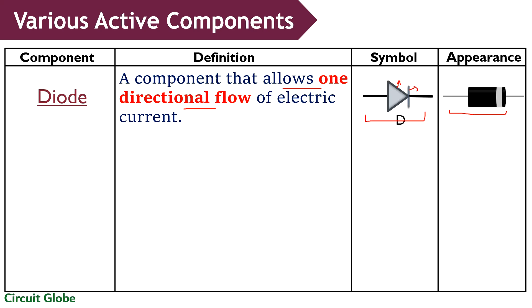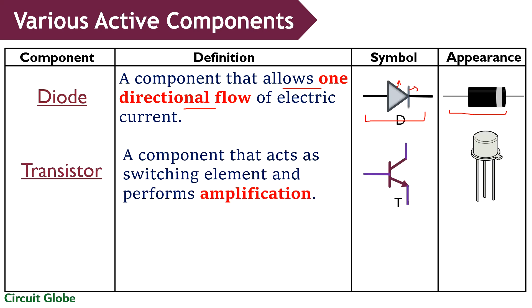Now, moving to the next active component that is transistor. Friends, transistors hold great importance in electronic circuits. It is used for the purpose of switching and amplification. It is a three-terminal device which is composed of semiconductor material and are classified as BJTs, FET, UJT, etc. The FET can also be classified as JFET and MOSFET and these are more further classified according to the mode of their operation. In this symbolic representation, we have shown a simple bipolar junction transistor of NPN configuration. And physically, a transistor appears like this.